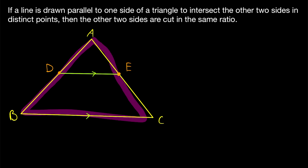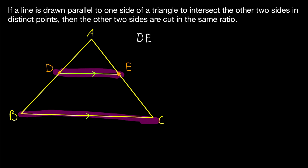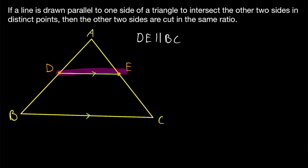It's saying we've got a triangle. If a line is drawn parallel to one side of the triangle, here's our parallel line DE, drawn parallel to the side BC. DE is parallel to BC — this is given.